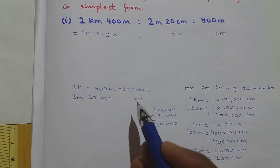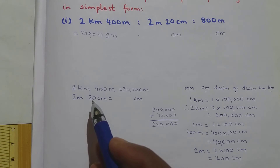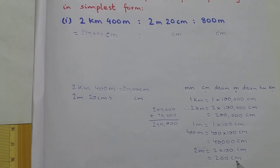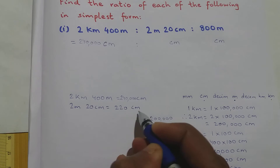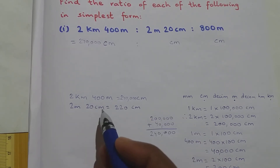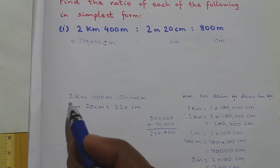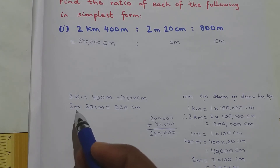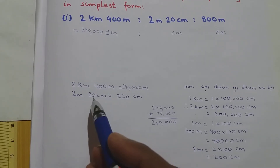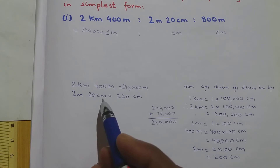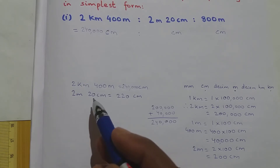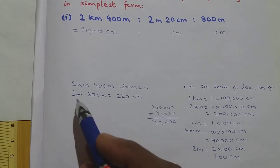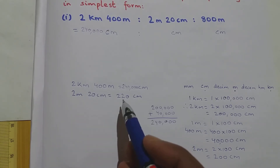2 meters is 200 centimeters and there is another 20 centimeters. So 200 plus 20 is 220 centimeters. So 2 meters 20 centimeters is 220 centimeters because I converted 2 meters to 200 centimeters and then added the 20 centimeters to get 220 centimeters.